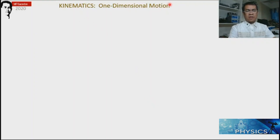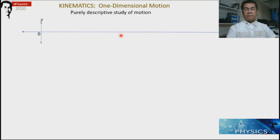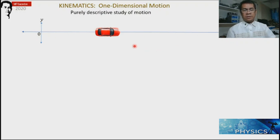Kinematics on One-Dimensional Motion. The meaning of kinematics is that it is a purely descriptive study of motion. If we consider a particle that is moving from one point to a different point in a straight line in one dimension, then we can always describe the particle.